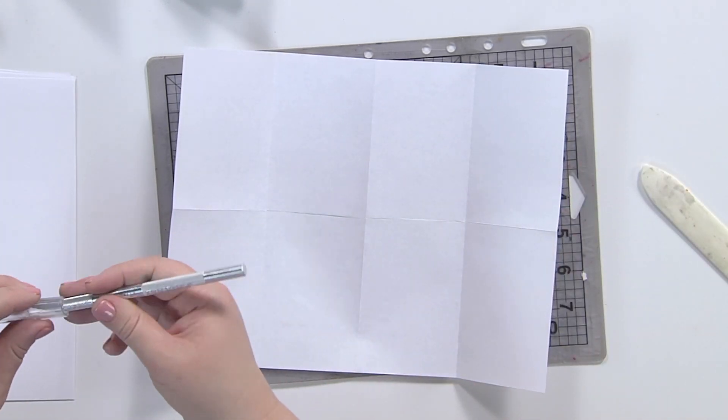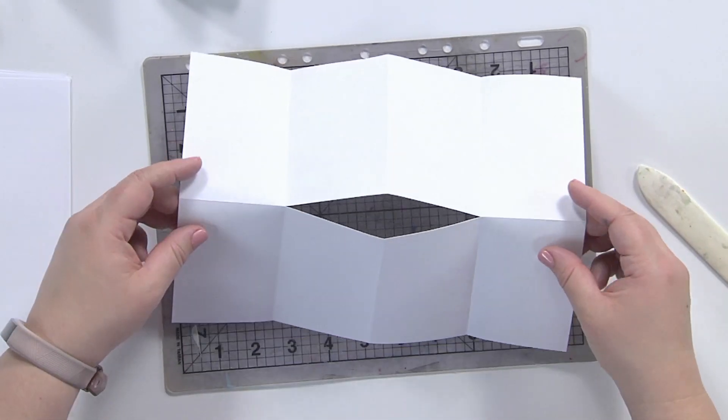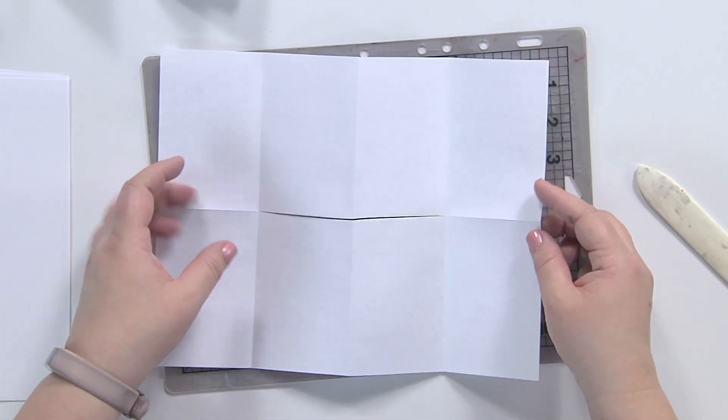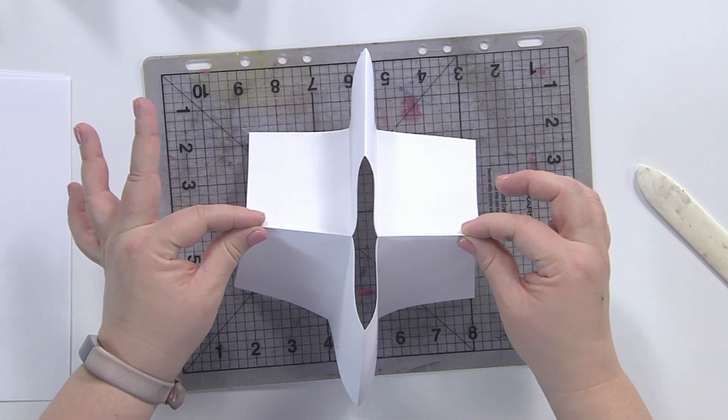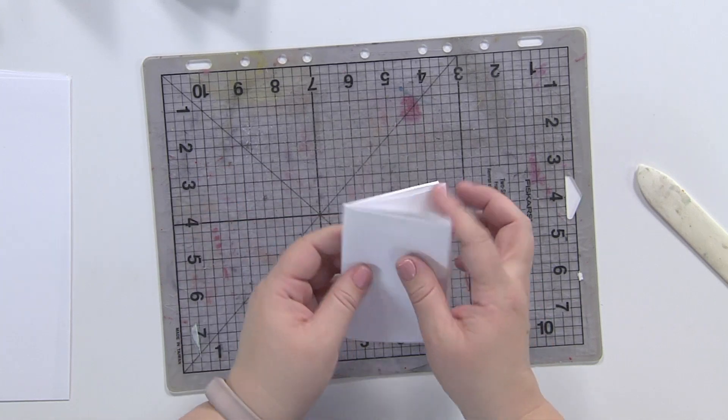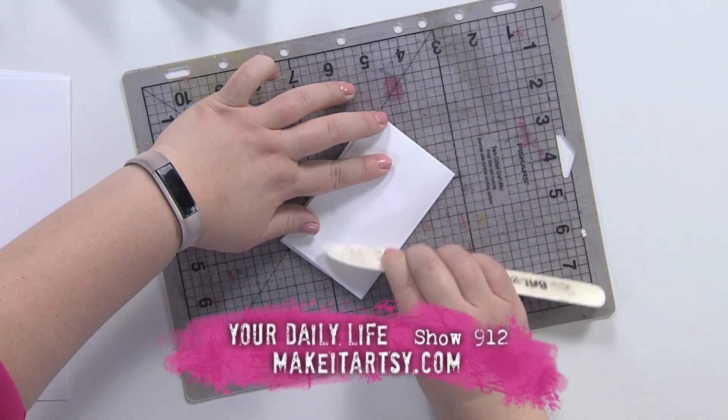So here we go. I have my single sheet of paper with a single cut from here to here. When I fold it up, you can see it makes, I think, like a mouth, something like that. And I push it in just like this, and it becomes a book. You just wrap it around and use your bone folder to help you out.